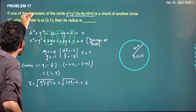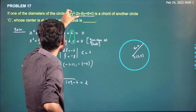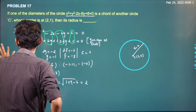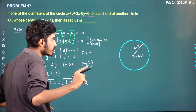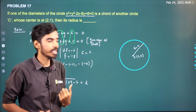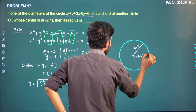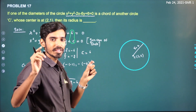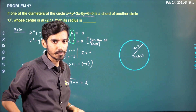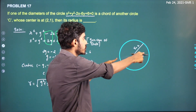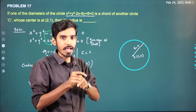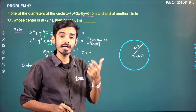If one of the diameters of this circle is a chord of another circle, a chord is any line segment connecting two points on the curve. If that chord passes through the center, it becomes a diameter. So the diameter of the first circle is a chord of the second circle.